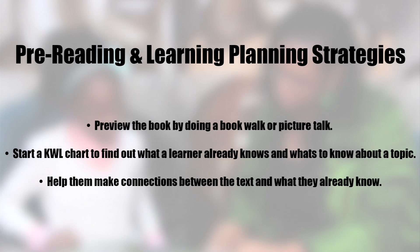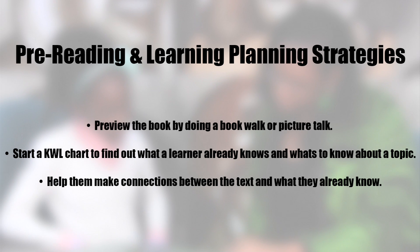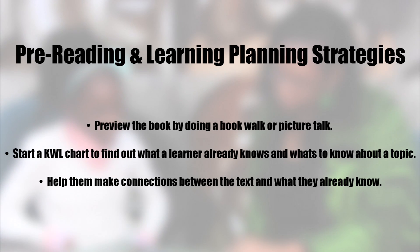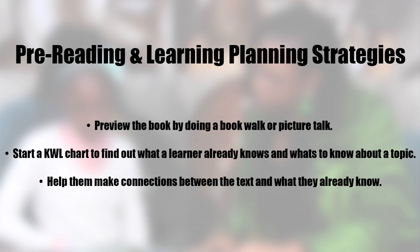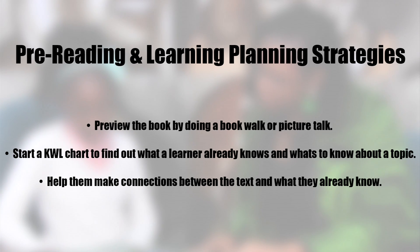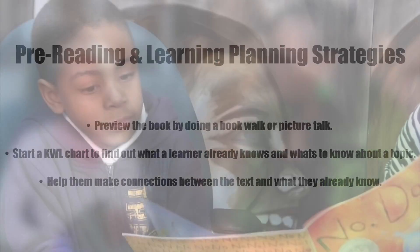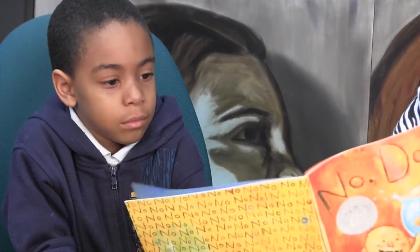Look at the cover of the book and the text and talk about it. Turn through the pages and talk about the book, and if there are pictures, use those to make predictions about the story. Ask questions like, 'What's happening here?' and 'What do you think is going to happen next?' Start a KWL chart to find out what a learner already knows and wants to know about a topic. Help them make connections between the text and what they already know.